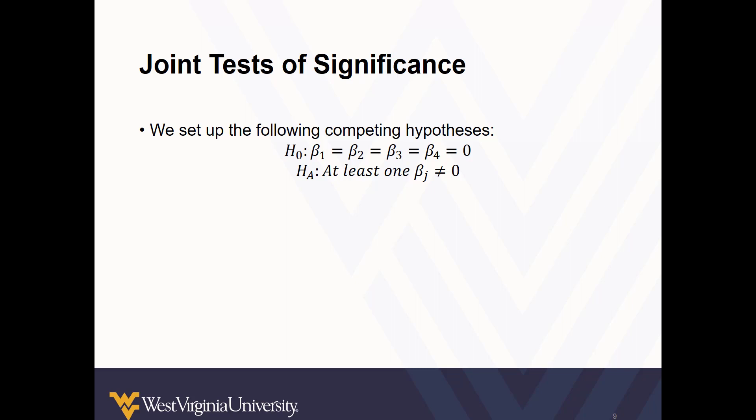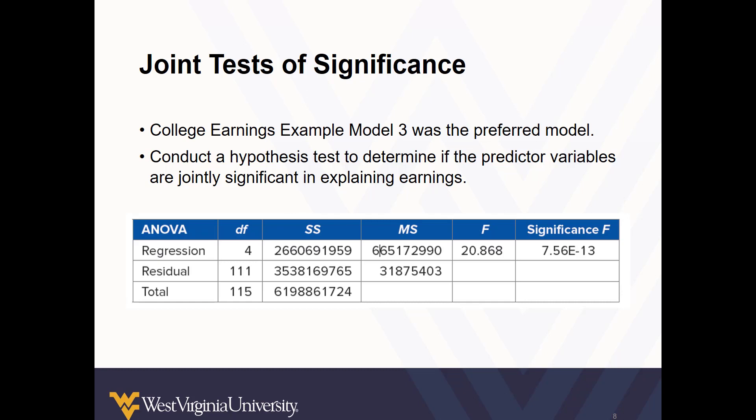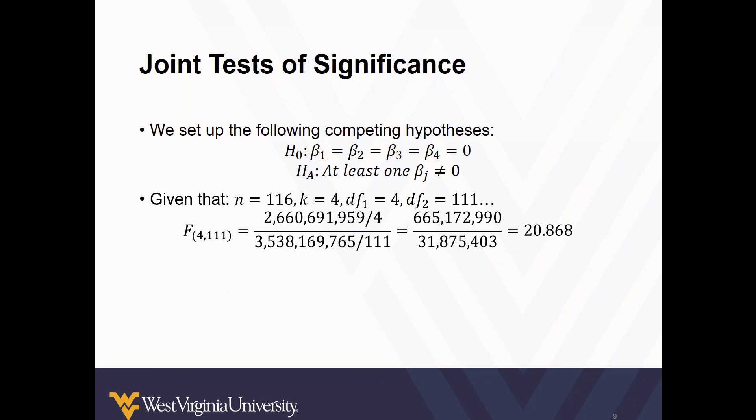The null hypothesis is that our unknown parameters are insignificant. They are all indistinguishable from zero. Our alternative hypothesis is that at least one is significantly different from zero. Given our values for SSR, SSE, and degrees of freedom, we can calculate our f-statistic as 20.868, which was given in the ANOVA table.